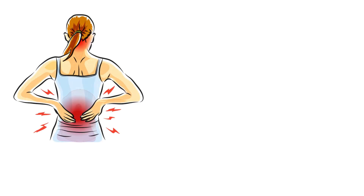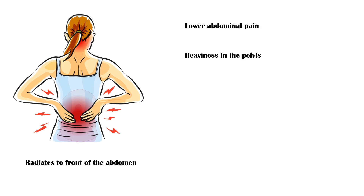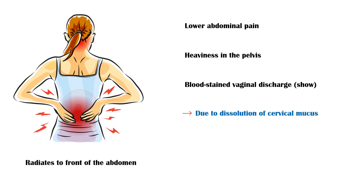Along with true labor contractions, individuals also experience an intense back pain which radiates to the front of the abdomen. They will also have a lower abdominal pain and heaviness in the pelvis. Around these events, the individual may have blood-stained vaginal discharge, also called the show. This is due to the dissolution of the cervical mucus that plugs the cervix during pregnancy.